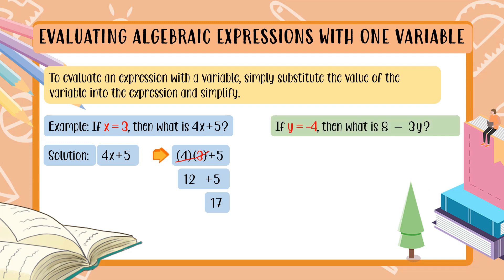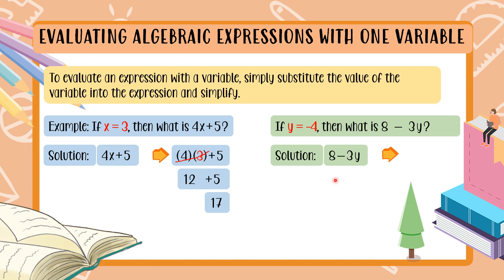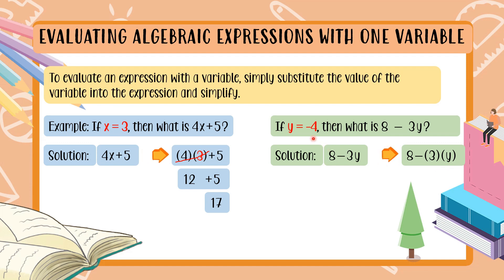Let's have another example. If y is equal to negative 4, then what is 8 minus 3y? The solution: 8 minus 3y is also 8 minus 3 times y. The next thing we do is substitute the value of y. The value of y is negative 4, so we change y to negative 4, then proceed with GEMDAS. No groupings, no exponents, so let us proceed to multiplication and division.